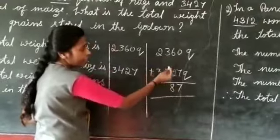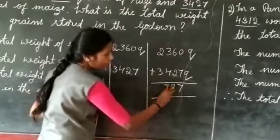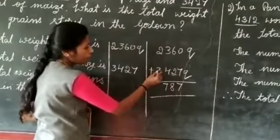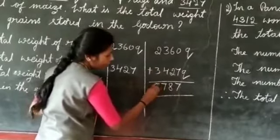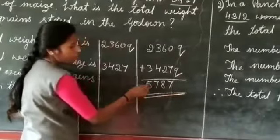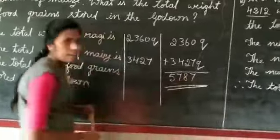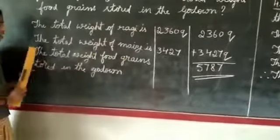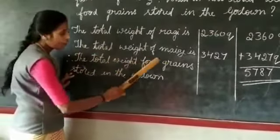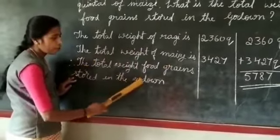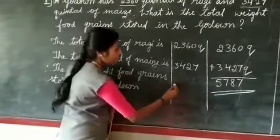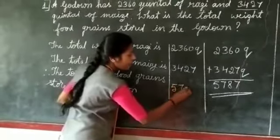So, the total weight is 5,787. Therefore, the total weight of food grains stored in the godown is 5,787 quintal.